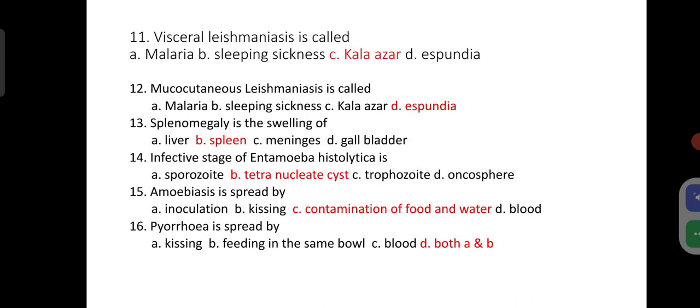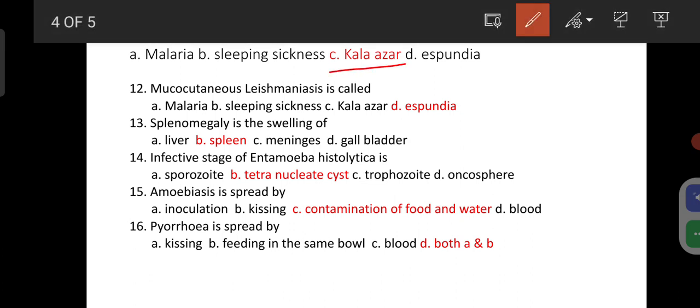Visceral leishmaniasis is also called Kalajar. Mucocutaneous leishmaniasis is also called Espandia disease. Spleenomegaly is the swelling of spleen.